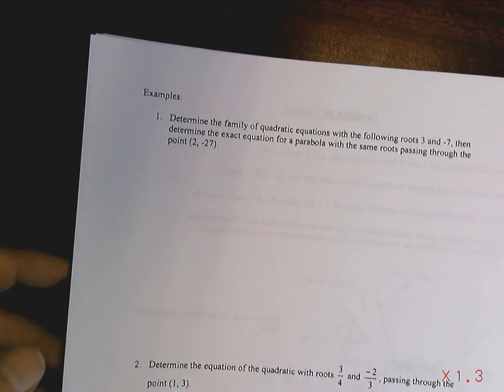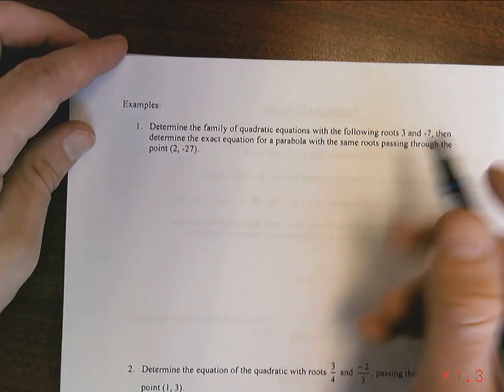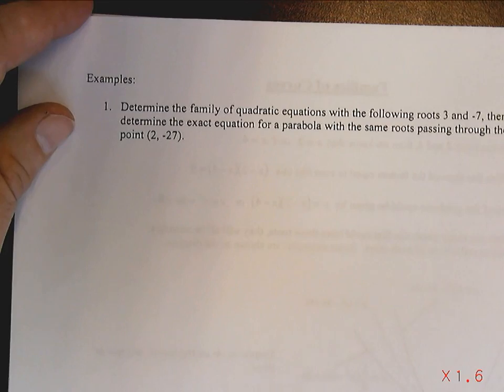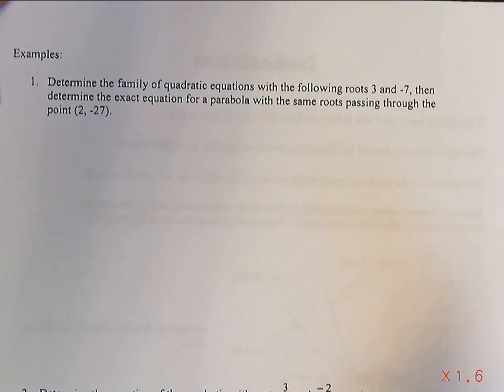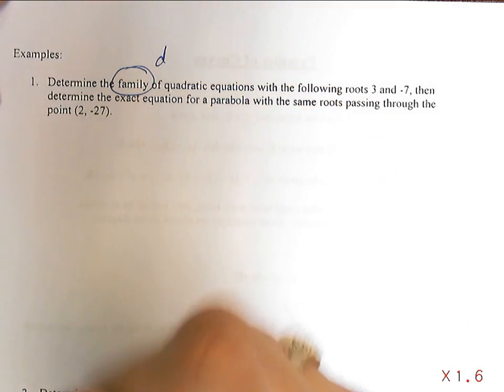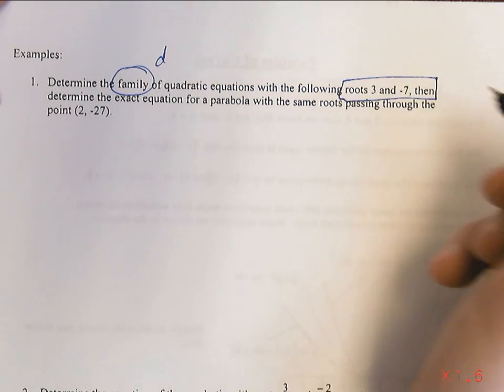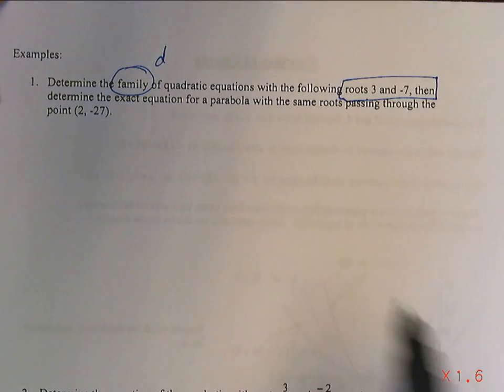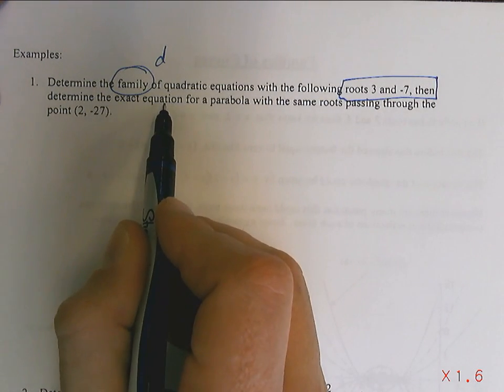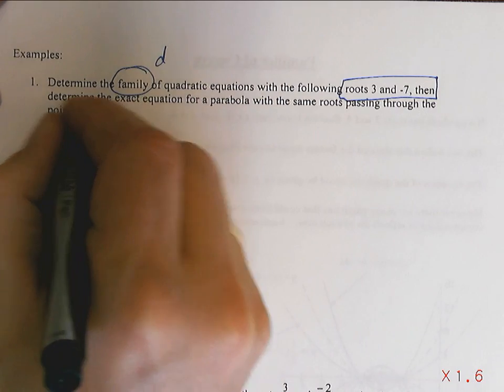All right. So let's do some examples. For period one, you saw this example already. For period two, you did not. This will be new. It'll be fine. We will get through it. Let's break down this question. Determine the family of quadratic equations with the roots 3 and negative 7. And then determine the exact equation for a parabola with the same roots, but passing through this point.